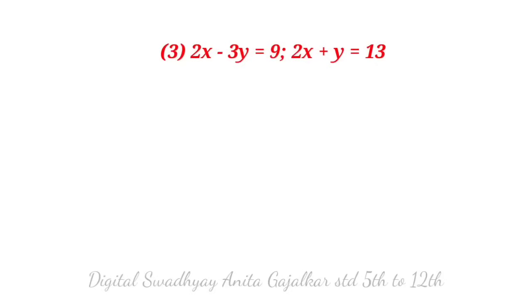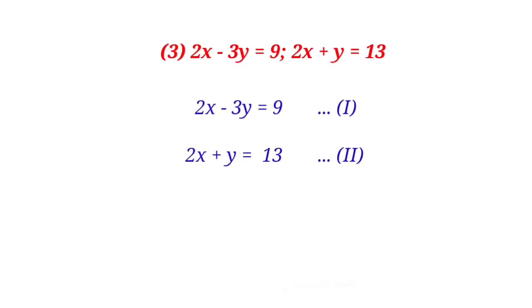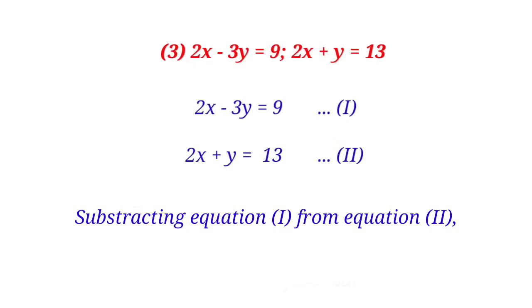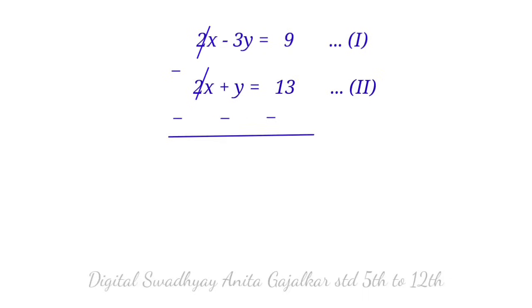Next problem: 2x minus 3y equal to 9 (equation first), 2x plus y equal to 13 (equation second). Both equations have 2x, so we subtract. Subtracting equation first from equation second: signs of the first equation will change due to subtraction.